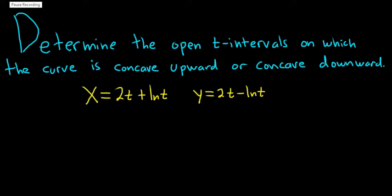Hey, what's up YouTube? In this problem we're going to determine the open t intervals on which the curve is concave upward or concave downward. It's the second derivative that describes concavity: a positive second derivative means it's concave up and a negative second derivative means it's concave down.